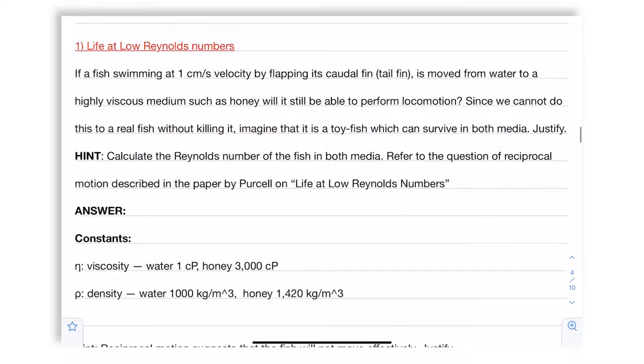Some of the constants that you will need for this are viscosity, which for water is 1 centipoise and for honey is 3000 centipoise. You remember we discussed this during one of the earlier tutorial examples of viscosity as measured using the ball drop viscometer. And for density, we are using 1000 kg per meter cube for water and the density of honey is 1420 kg per meter cube.